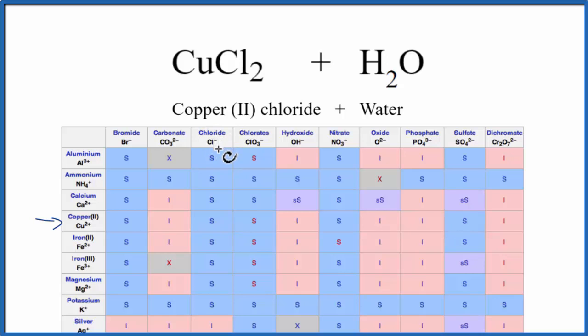As we go down, Cl- meets up right here, so here we have our Cu2+ and our Cl-. It says S, that means it is soluble and it will dissolve in water.